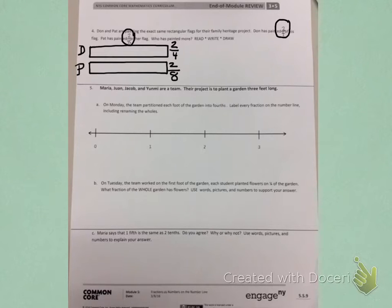For Don, I need to partition the rectangle into four equal parts. So I will first break it in half and then break each of those halves in half. Don has completed two-fourths, so I will shade one-fourth, two-fourths.